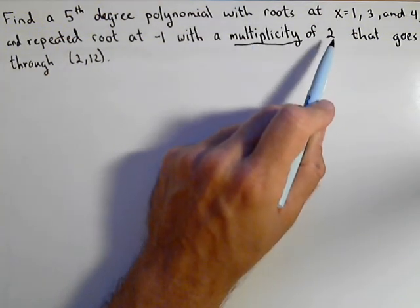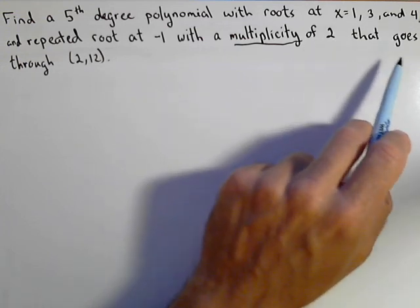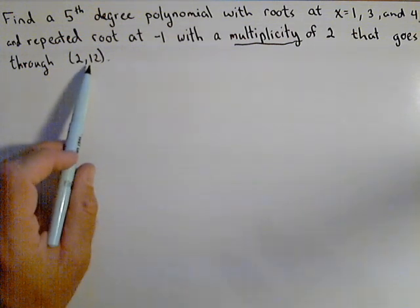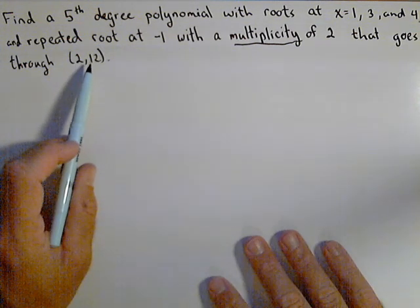That means it's repeated two times. We're also going to require that this polynomial goes through the point (2,12). That'll make it unique. I'll explain what I mean by that in a second.